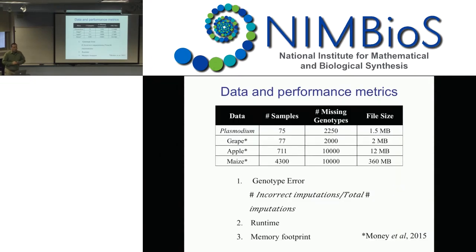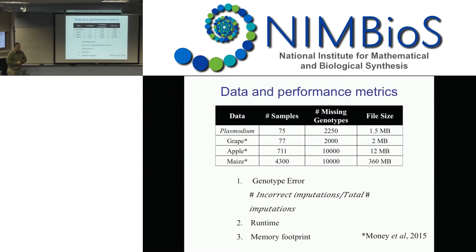We then worked on real data. This is near to my heart because it's all agriculture-focused. We worked on grapes, apples, and corn. These are a number of samples — there's way more corn data available than everything else. What we do is call the variants and then pretend we don't know some of them, so we have ground truth. We actually have all the SNP calls, and in this case we decided not to know over 2,000. The Money et al. group used these datasets and computed this information. Genotype error is how many times you're wrong over how many predictions you make — along with runtime and memory footprint.